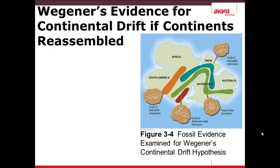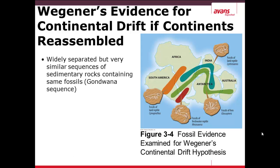Wegener's evidence was he saw these different continents and they would fit together as puzzle pieces. You see this in the figure on the right-hand side — Africa, South America, Antarctica, Australia, and India — that these fit neatly together into one continent. He also noticed that widely separated but very similar sequences of sedimentary rocks containing the same fossils, such as the fossil of the land reptile which matched across Africa and South America, and the fossil of the Glossopteris fern throughout the different continents.